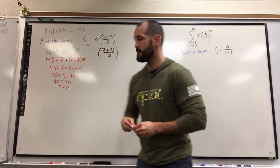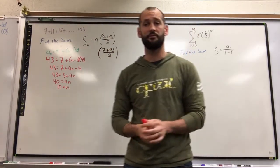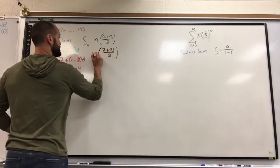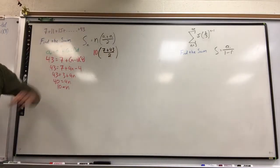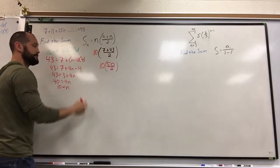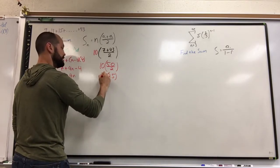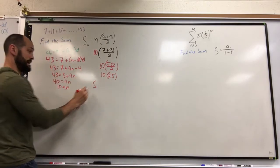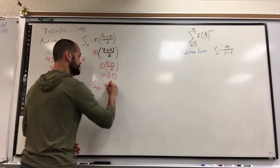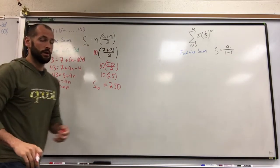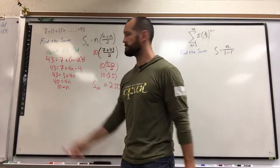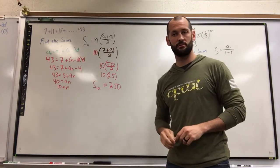You're not done! Too many times you guys get here and you stop. Congrats, you've done half of it — that's an F. Now that I have my information, plug it in. n is 10. We can start doing a little celebration: 7 plus 43 is 50, half of 50 is 25, meaning my final sum of my first 10 terms — it's not S sub n anymore because we know what n is — S sub 10 is 250. Find it and then plug it in and you can finish it. Sum assembly required.